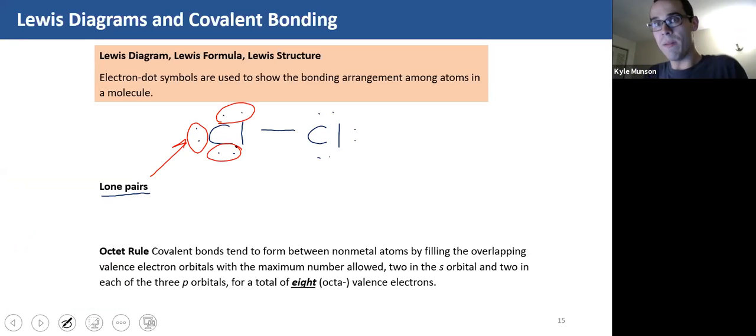They're in pairs, right? There's two, two, two. They're again, not participating in bonding. They're just kind of hanging out. That's what we mean by lone pairs, shown here. So if you're given a structure like this, you should be able to identify the lone pairs on the atoms.